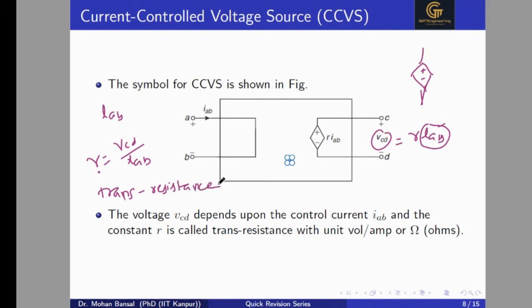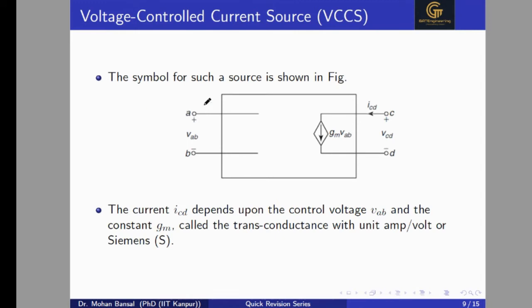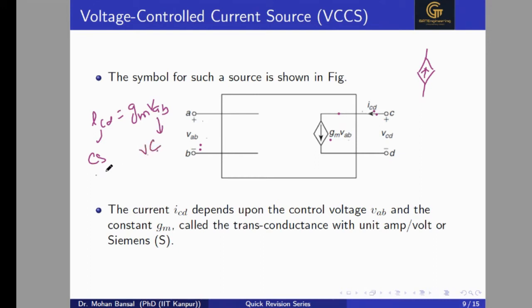For the Voltage Controlled Current Source: the source is a current source (arrow inside the diamond). The current Icd flows from c to d, and Icd = gm·Vab, where Vab is the input voltage across terminals a and b. Here gm is called trans-conductance, defined as the ratio of output current Icd to input voltage Vab. This is called the Voltage Controlled Current Source.